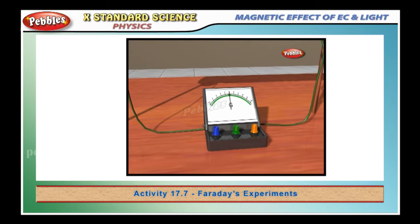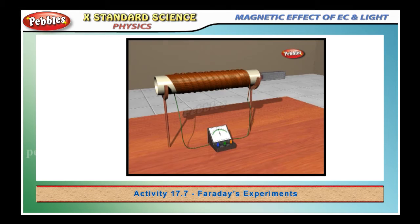This indicates the presence of current in the coil AB. The deflection becomes zero when the motion of the magnet stops. Once we stop the magnet, the reading shows zero.